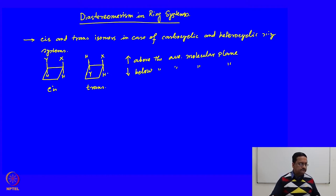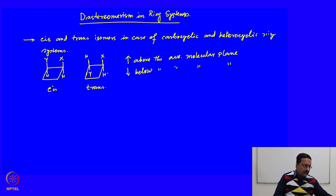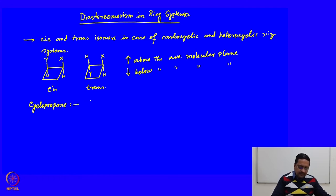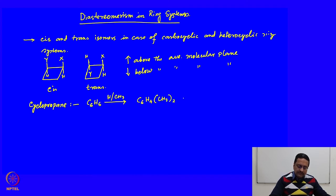If we try to understand these isomers in terms of whether they are enantiomers, diastereomers, or meso compounds, we need to understand it in a systematic manner. Let us start by considering a cyclopropane system, because cyclopropane is the smallest ring. When we replace two hydrogens with a methyl group, we get dimethylcyclopropane (C₆H₄(CH₃)₂).